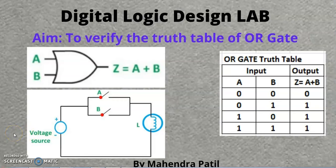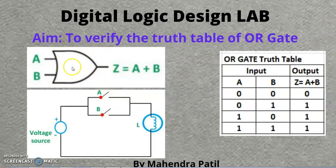Hello friends. In this video, we will study and verify the truth table of OR gate. This is the symbol that we use for representation of OR gate. It takes two inputs A and B, and the output is Z equal to A plus B. It means that basically we use OR gate for addition of two signals.